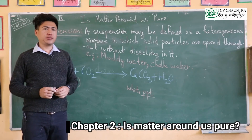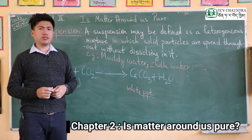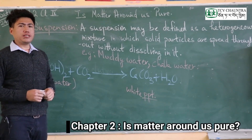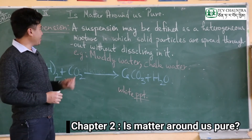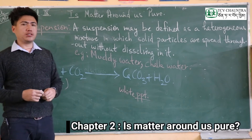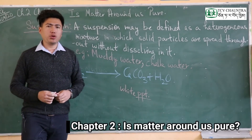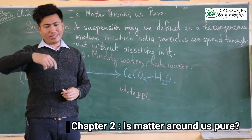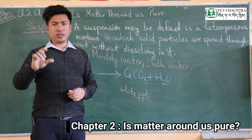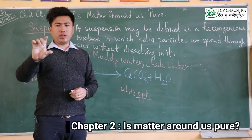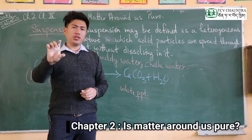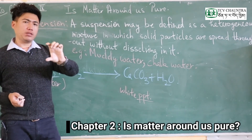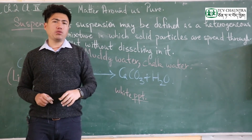If the particles do not dissolve, the solution is called a suspension. A suspension is a heterogeneous mixture, while a true solution is called a homogeneous mixture. Examples of suspensions include muddy water and sand in water.